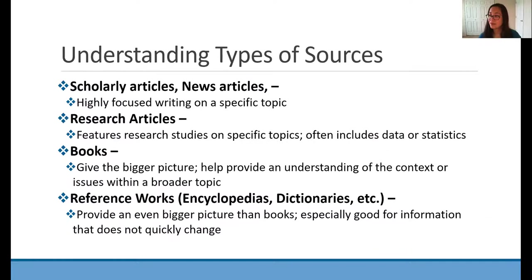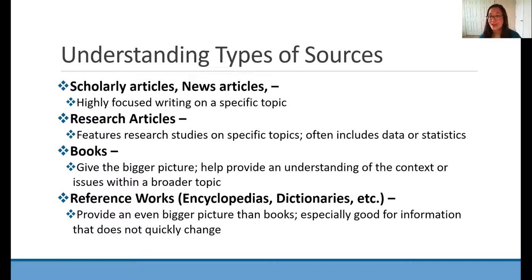Now we're going to review different types of sources. I'm sure you're familiar with articles, but there are different types. Scholarly articles are written by those in academia and are highly focused pieces of writing that have often gone through a review process to ensure accuracy. News articles are great for current affairs and are written by reporters who are often interviewing people in the field. Research articles are often written by the researchers themselves explaining their study, the background behind it, related studies, how they conducted it, and their results and conclusions — these often include data or statistics as well.